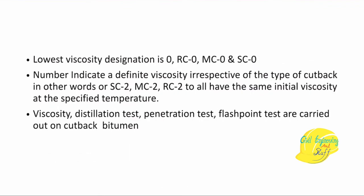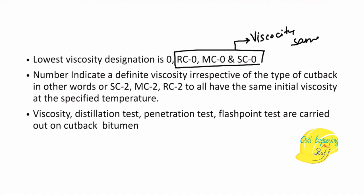The grading of cutback bitumen is done by abbreviation: RC represents rapid curing, MC represents medium curing, and SC represents slow curing. The numerical value in front of these represents the viscosity grading — the lower the number, the lower the viscosity. For example, RC0, MC0, and SC0 all have the same viscosity, but differ in their curing type.